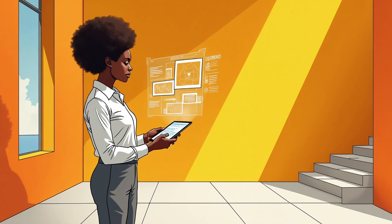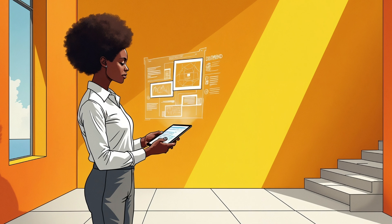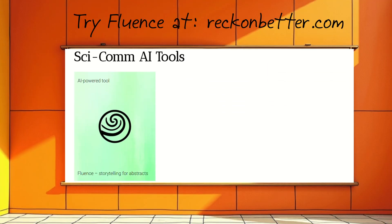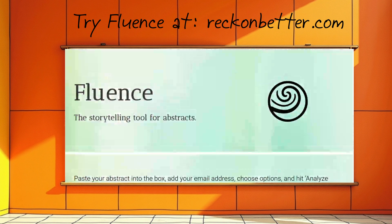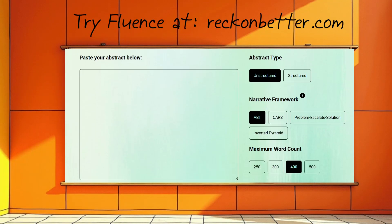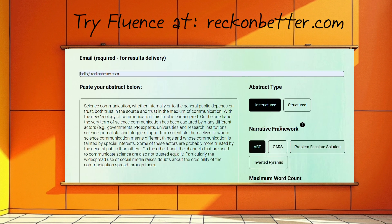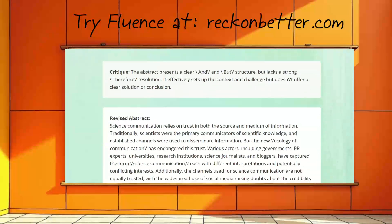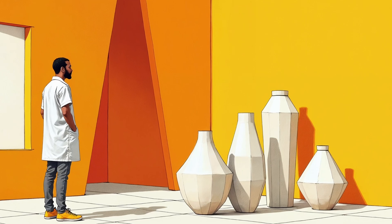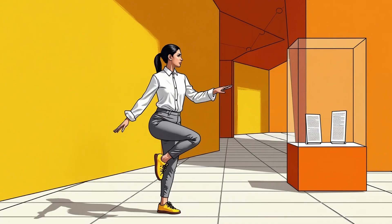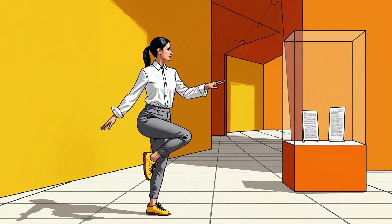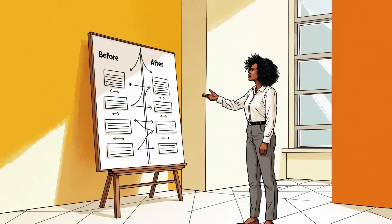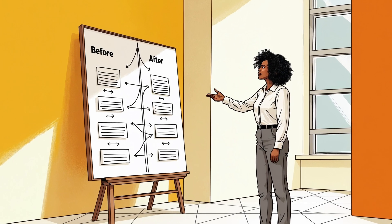Using narrative frameworks in abstracts requires practice, but AI tools can accelerate your learning. Fluence, from Reckon Better, can evaluate your abstract's narrative flow and even suggest edits to fit alternative storytelling frameworks. Paste in your draft and it instantly remixes your content into any of four frameworks, including CARS. This side-by-side comparison helps you identify which structure most effectively showcases your research — no starting from scratch. Instead, you see your exact content restructured across different narrative formats.